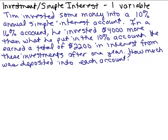We're going to do this investment simple interest problem using one variable. Tim invested some money into a 10% annual simple interest account. In a 16% account, he invested $4,000 more than what he put in the 10% account. He earned a total of $2,200 in interest from these investments after one year. How much was deposited into each account?